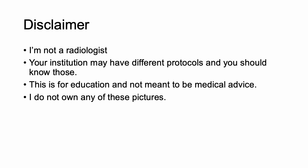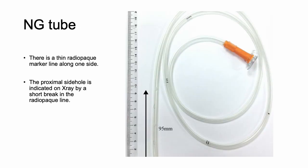This is what your typical NG tube looks like. I want to especially point out that there is a radiopaque marker along the side, and then the proximal side hole. You can see there are holes here — the proximal side hole is indicated by a short break in the radiopaque line. It's important to know where this side hole is, and we will go over that in the next couple of slides.